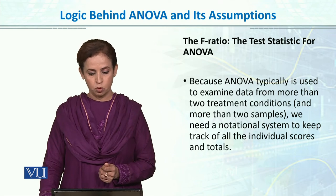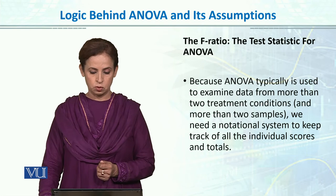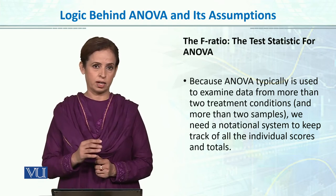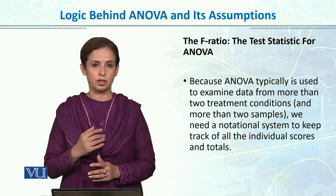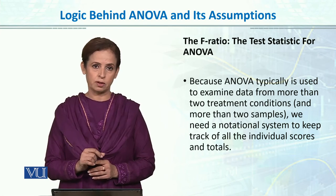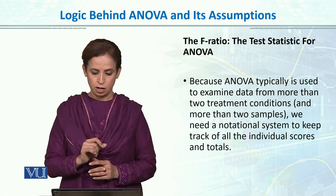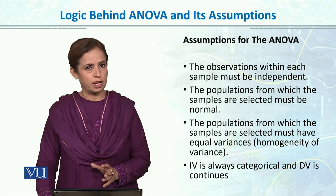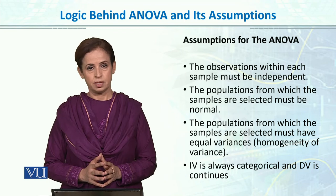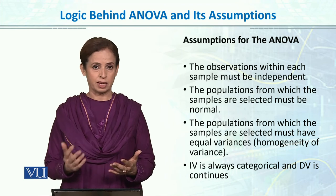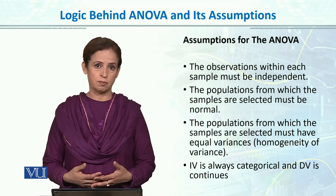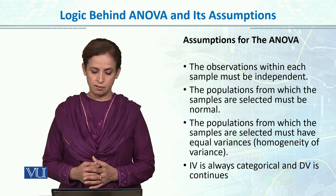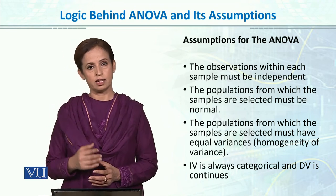Because ANOVA is typically used to examine data from more than two treatment conditions and more than two samples, we need a notational system to keep track of all individual scores and totals. In ANOVA, we first look at total variability, then divide it into within and between parts, then examine degrees of freedom, and finally calculate the F-ratio. The assumptions of ANOVA are the same as for other parametric tests used in the T-test: independence of observation, and the underlying population being normal.